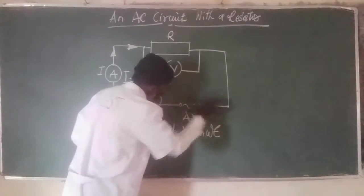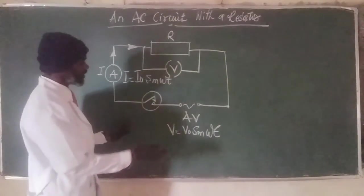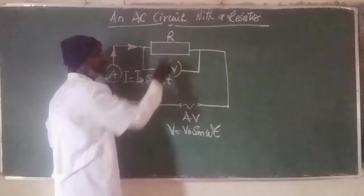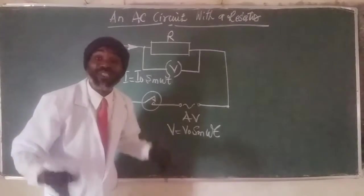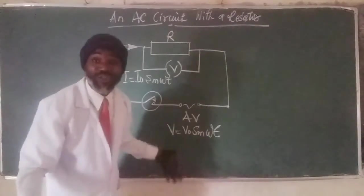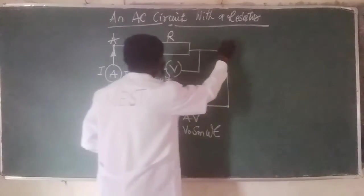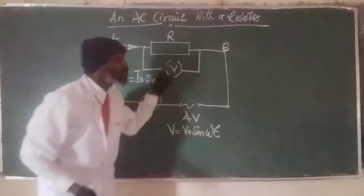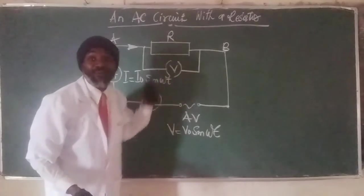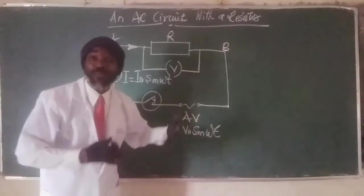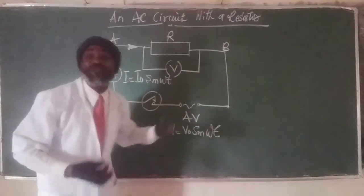Having understood all of that, of course, when current flows into the resistor R, there must be a certain amount of potential drop or the potential difference across the terminals A and B as a result of the work done by the resistor. Because the resistor is going to resist or offer some amount of resistance to the flow of current, be it an alternating current or a direct current.